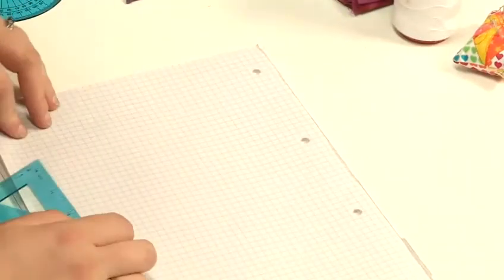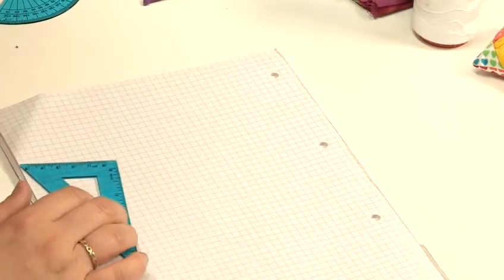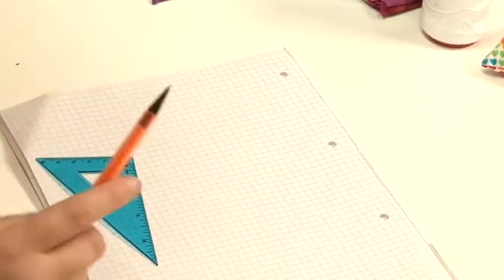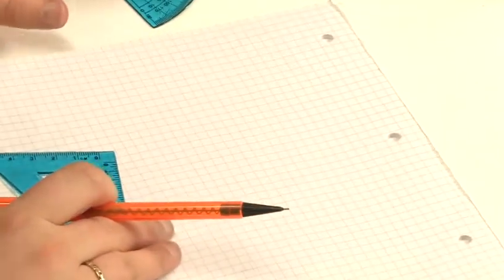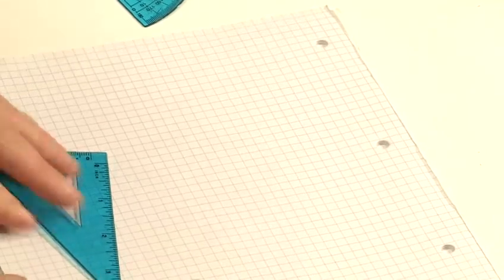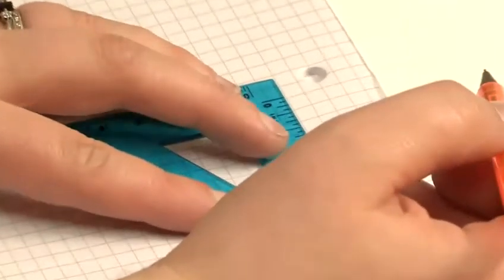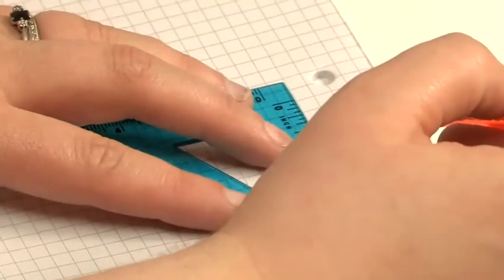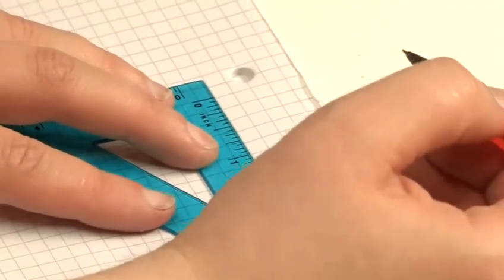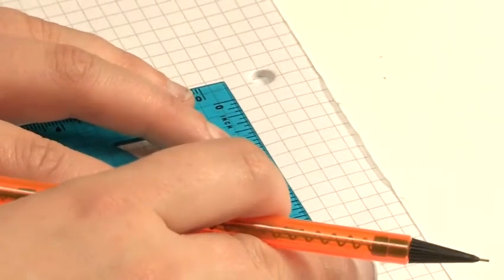So to draft your own hexagons, you will need a protractor as you will be angling sides and some graph paper. Unfortunately this is metric, so it won't fit exactly, but you can get it as close as possible. So I'm going to make a 2 inch hexagon.